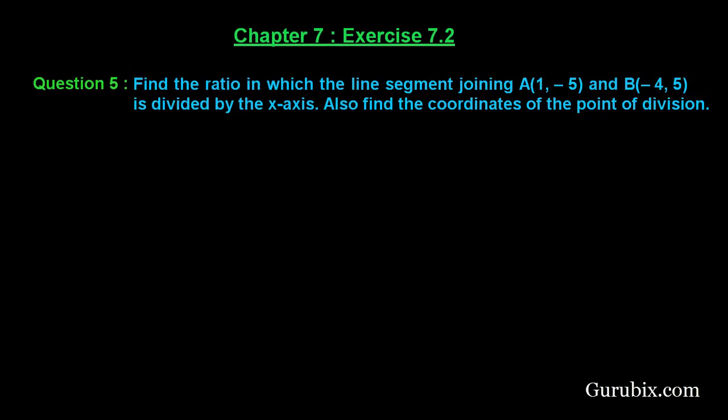Let us solve question number 5 of exercise 7.2 of chapter 7. The question says find the ratio in which the line segment joining A(1, -5) and B(-4, 5) is divided by the x-axis. Also find the coordinates of the point of division.